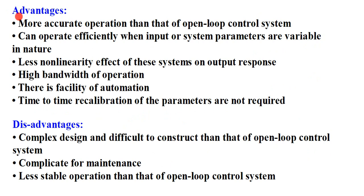Now discussing the advantages of closed loop system: more accurate operation than open loop control system, can operate efficiently when input or system parameters are variable in nature, less non-linearity effect on output response, high bandwidth of operation, and there is a facility of automation because it works automatically on the basis of error signal.